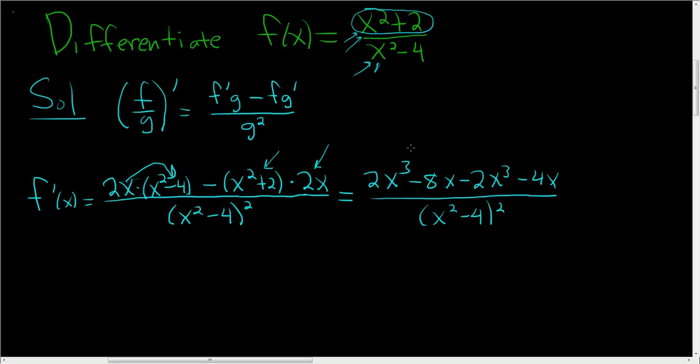Let's see, does anything cancel? Yep, the 2x cubed terms go away, and we're left with negative 12x. So the final answer is: the derivative of f is equal to negative 12x divided by x squared minus 4 quantity squared.